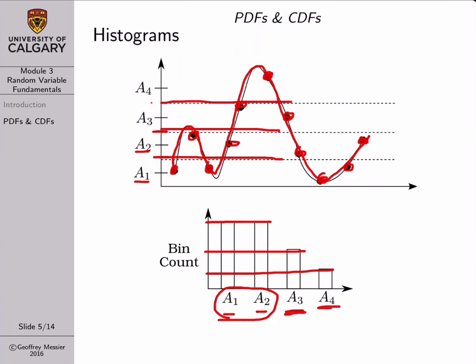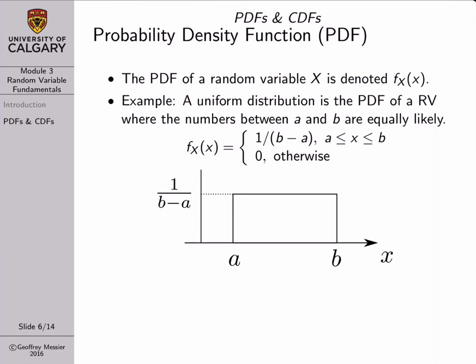We're not going to use histograms exactly, but we're going to use something called probability density functions, which you can almost think of as infinite-precision histograms. So the first tool we use to deal with continuous random variables that have an infinite number of outcomes is a probability density function, or PDF. Just to start with notation: if we're dealing with a random variable X, the PDF is denoted as a function f with subscript capital X, and the argument to that function is a lowercase x. If we were dealing with the PDF of a random variable Y or Z, these would change accordingly.